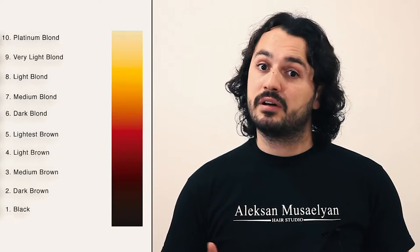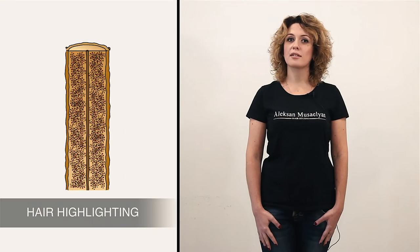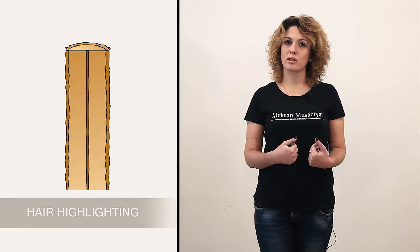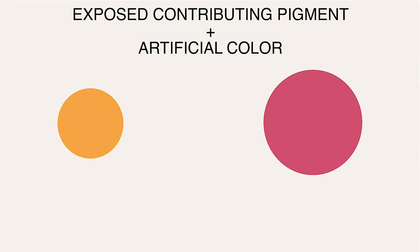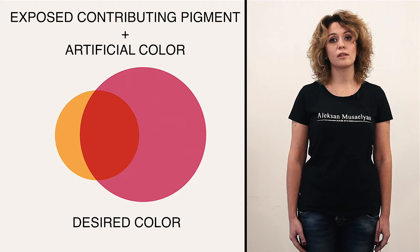Let us dwell on hair color we get as a result of natural pigment destruction, either lightening or bleaching. The color formed as a result of hair lightening or melanin destruction is called the exposed contributing pigment. In order to get a light hair shade, we remove all the pigments from the hair. If we need a dark hair shade, we on the contrary have to fill it. The exposed contributing pigment plus artificial color gives us the desired color. When we lighten the hair, it's important to consider that the artificial pigment will be superimposed on the exposed contributing pigment. As a result, the new color will be the total of the artificial color and the color of the exposed contributing pigment.